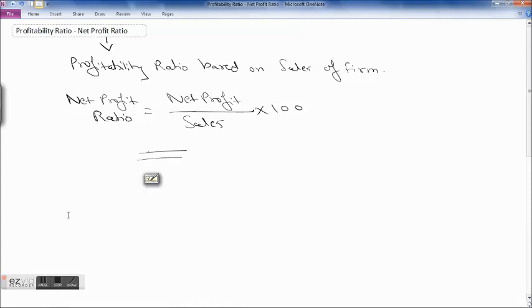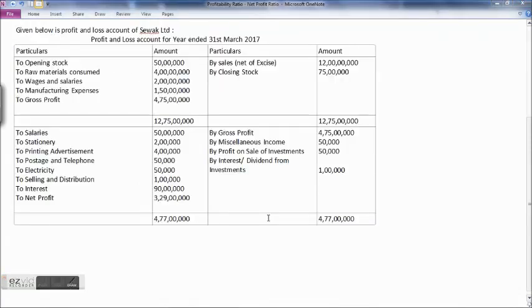Let's see one example of calculating net profit ratio. Given below is a profit and loss account for the year ended 31st March 2017. You have particulars and amounts on debit and credit sides. On the credit side we have by sales net of excise 12 crores, by closing stock 75 lakhs.